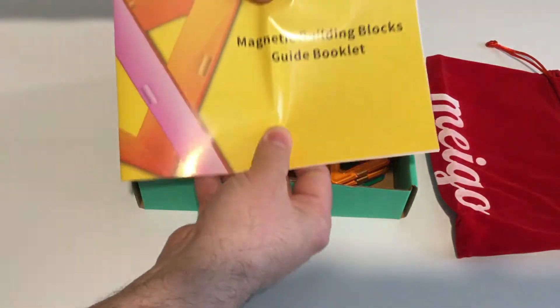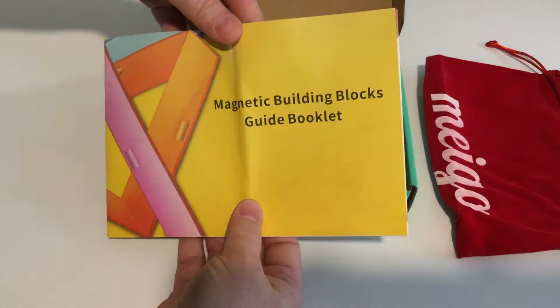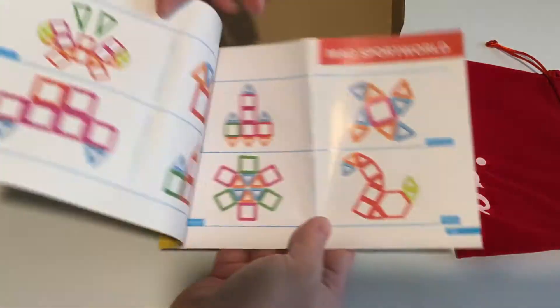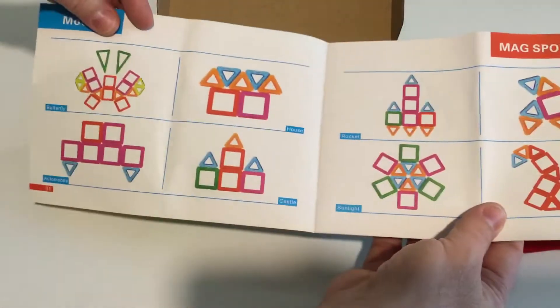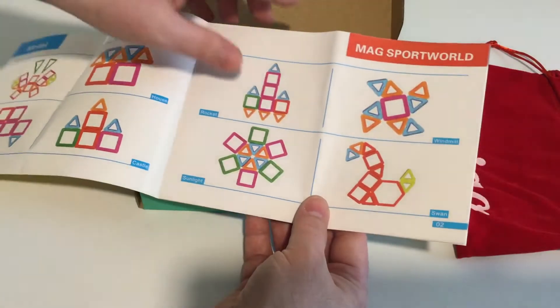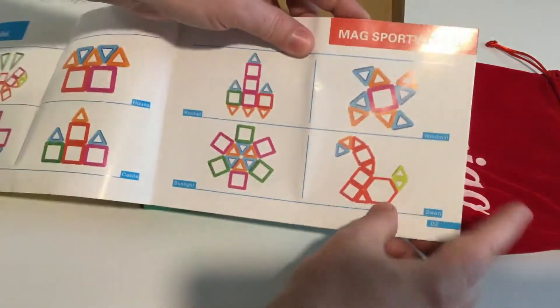It also comes with a guidebook. Shows you how to make all different shapes and stuff. It has about 8 to 10 pages here of all different shapes you could try.